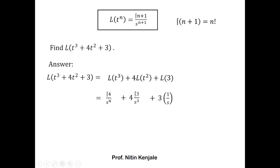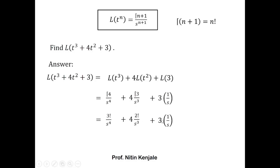Now we replace Γ(4) using the factorial property: Γ(4) equals 3 factorial, and Γ(3) equals 2 factorial. So the final answer for the Laplace transform of t³ + 4t² + 3 is: 3!/s⁴ + 4·(2!)/s³ + 3/s.